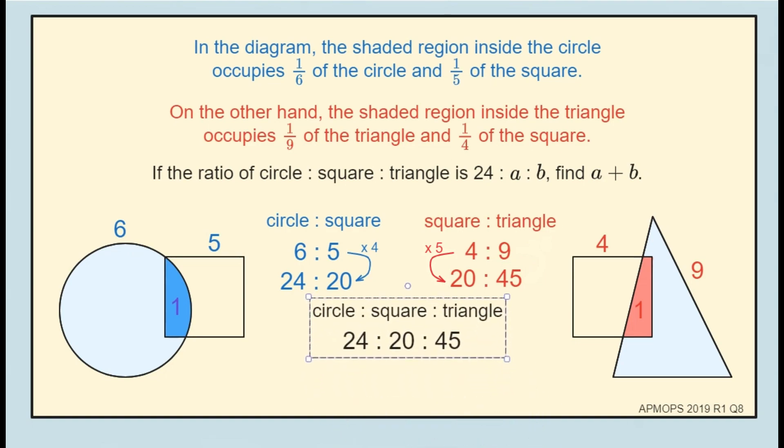We can now combine the ratios and conclude that the ratio of circle to square to triangle is 24 to 20 to 45.